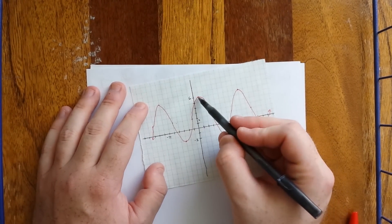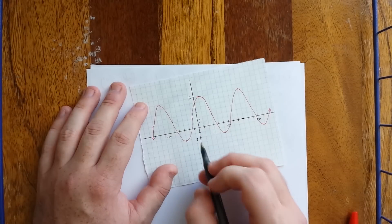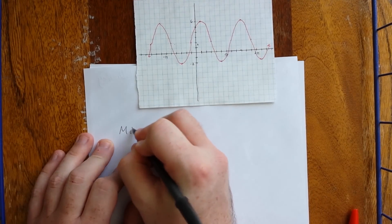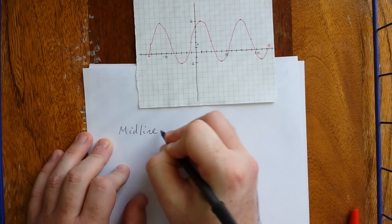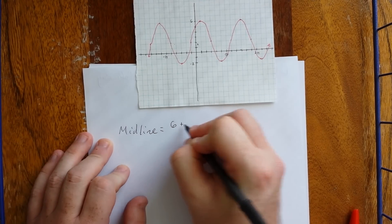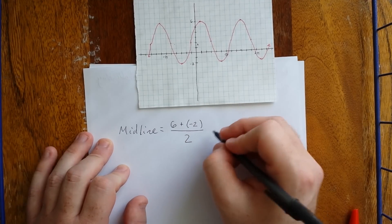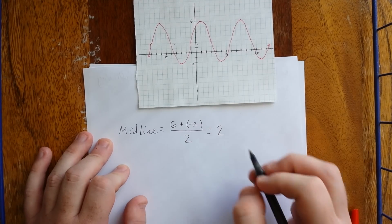First thing I'd like to calculate is both the midline and the amplitude. So, let's start with the midline. The midline is going to be exactly halfway in between a maximum value, which is 6, and a minimum value, which is 2. Halfway in between means take their mean.